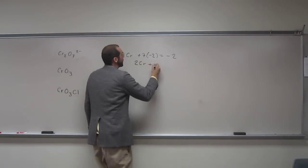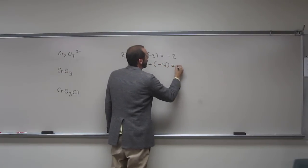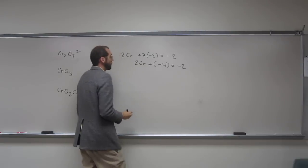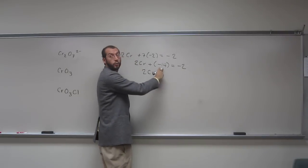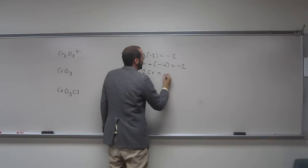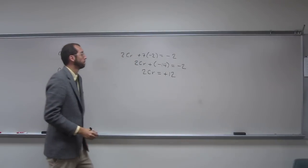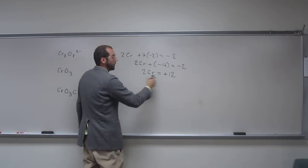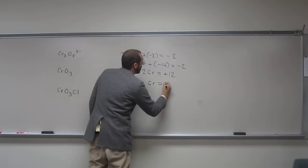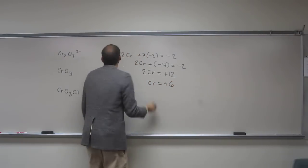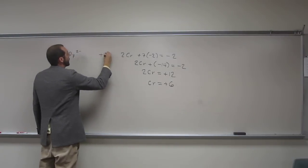So 2Cr plus minus 14 equals minus 2. So 2Cr equals, if we add 14 to both sides, it's going to be plus 12. And then now we have to divide both sides by 2. So chromium in the first one is plus 6 oxidation.